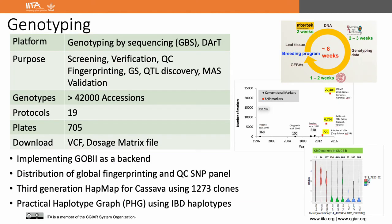Now coming to genotyping data — during the first few years of the project we used GBS as our genotyping platform. All genotyping work for the NexGen project was done at the Cornell genotyping facility. The sequence data was processed using the TASSEL pipeline, SNPs were filtered using custom scripts, missing values were imputed, dosage values were calculated, and these files are uploaded to CassavaBase for genomic selection predictions. After GBS was patented, we moved to DArT. Currently we have genotyping data for more than 42,000 accessions and around 500,000 SNPs.